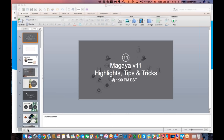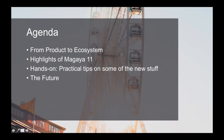Let's talk about the agenda. Today we're really looking at the product itself and the ecosystem. You've all been using Magaya, but now we're going to introduce something completely new — not just changing the way you work, but the way you communicate and work around the system. We'll give you the highlights of Magaya 11. It's extremely important because it's going to change the way we connect to other systems. Magaya is used in over 70 countries, so we have an opportunity to connect to all these countries using our ecosystem.